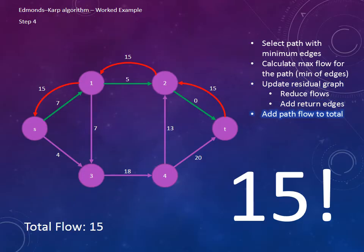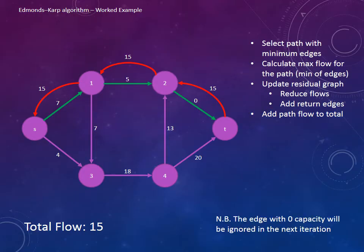Now that we've allocated 15 to flow down this path from the source to the sink, we can add 15 to the total. Notice the edge between 2 and the sink is now 0. It will be ignored in the next iterations as it already has the maximum flow. Some implementations choose to remove it, but for clarity we're going to leave it there as a placeholder.